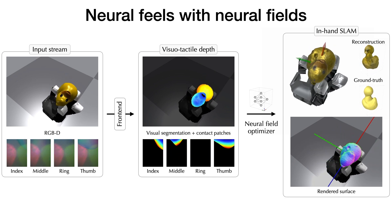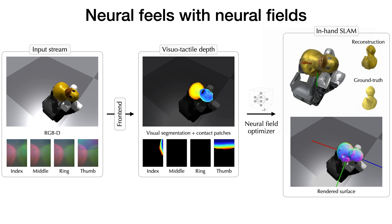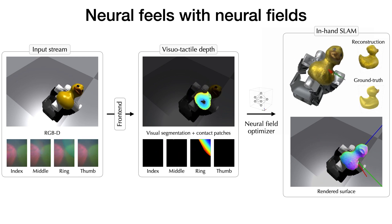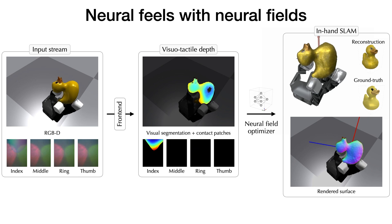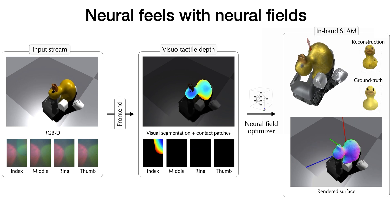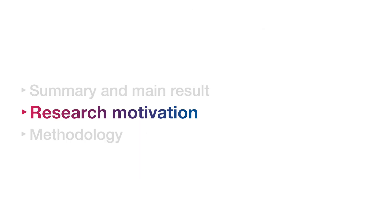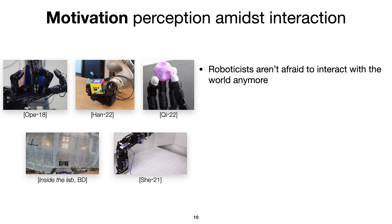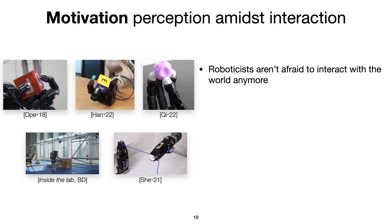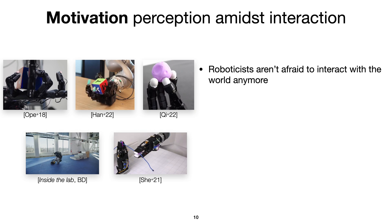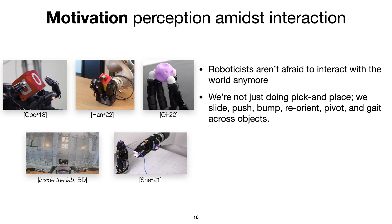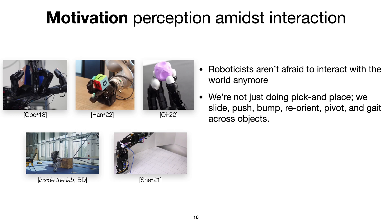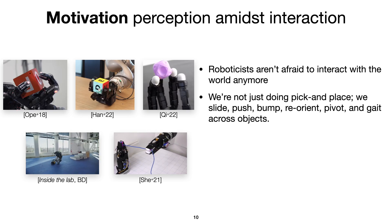We observe that even with noisy segmentations, we're able to get a cohesive result. Let's zoom out a bit and talk about the high-level motivation of this work. Robotics researchers are not averse to contact anymore — in fact, they embrace it. The community is not just doing pick-and-place. They're sliding, grasping, pushing, pumping, reorienting, and gating across different objects.